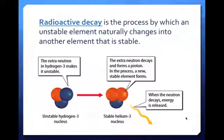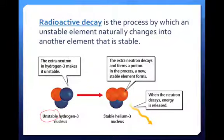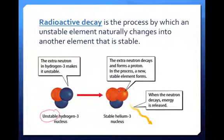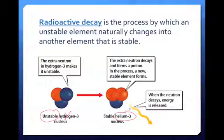Radioactive decay is the process by which an unstable element naturally changes into another element that is stable. Hydrogen-3 is actually unstable, so it's going to decay — that means this element is radioactive. The extra neutron decays and forms a proton, and in this process, a new stable element forms. Instead of hydrogen-3, the neutron changes into a proton, so now we have two protons. When you change the number of protons, you change the element. No longer do we have hydrogen — now we have helium-3, which is a stable element. When that change occurs and the neutron decays, energy is released, and this is what we normally think of as radioactivity.